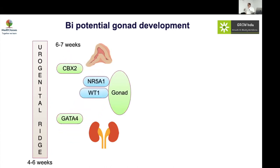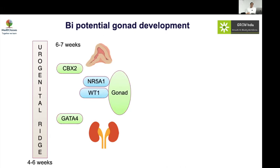Once the gonad is developed, this bi-potential gonad is exactly the same in both boys and girls, and genes will interact further to mature it. NR5A1 and WT1 are essential for both primordial testis and primordial ovarian development, but they are more likely associated with XY DSD. XX DSD requires an act of commission — extra androgen production or action — while XY DSD results from an act of omission, lacking sufficient hormone production.